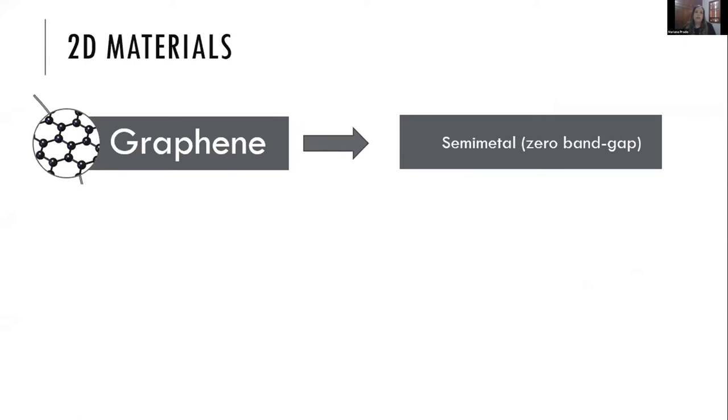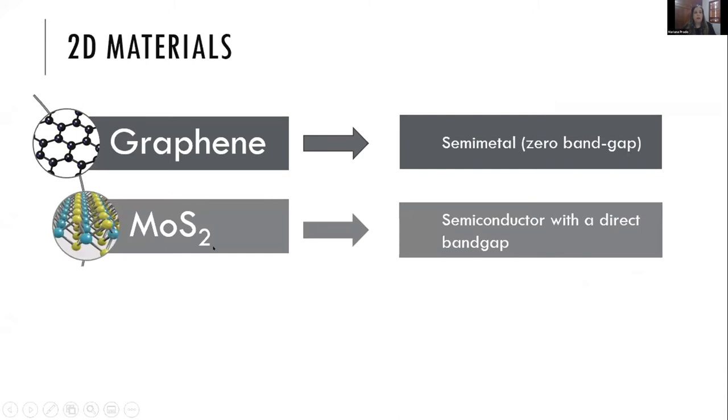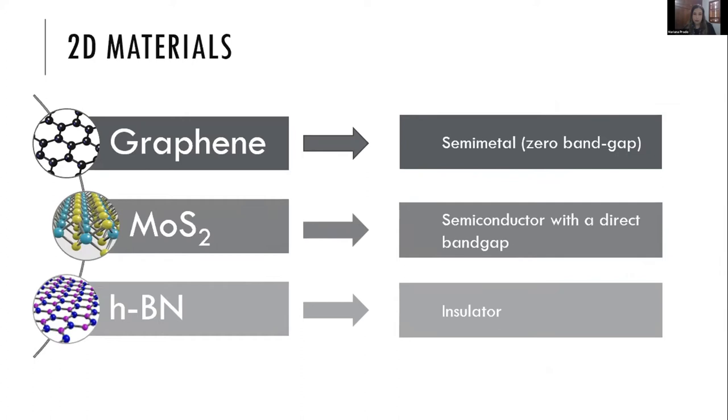For 2D materials, we now have them in a variety of compositions and properties. It all started with graphene, a semi-metal with zero band gap and a single layer of carbon atoms. We also have molybdenum disulfide, where atoms are not all in the same plane and it's a semiconductor with a direct band gap. A final example is hexagonal boron nitride, which is an insulator.